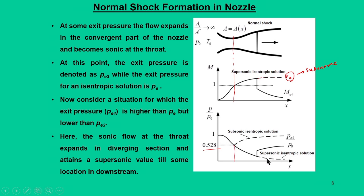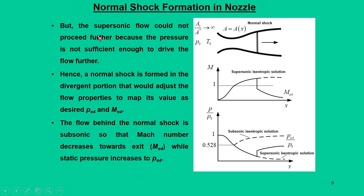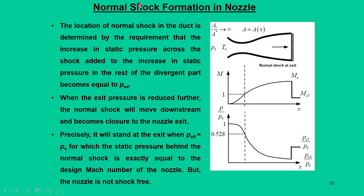The normal shock forms in the diverging portion to adjust flow properties to match the desired pressure Pe4. The sonic flow at the throat expands in the diverging section to a supersonic value until some downstream location, but cannot proceed further because pressure Pe4 is insufficient. The normal shock adjusts properties to match Pe4 and exit Mach number Me4. The flow behind the normal shock becomes subsonic, so Mach number decreases toward the exit.